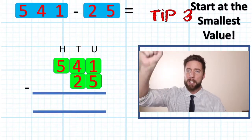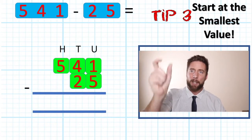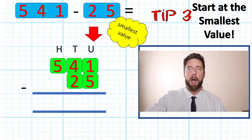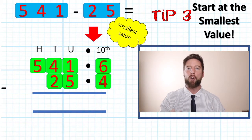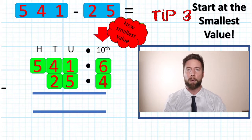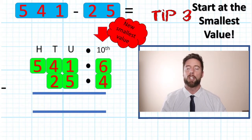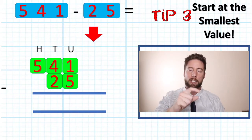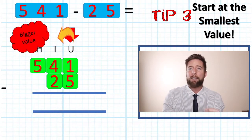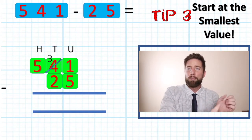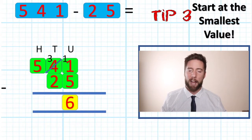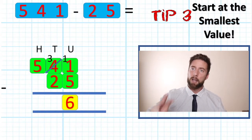Tip number three: start at our smallest value. It might be units, it might be decimals, but we always know the further to the right on our place value, the smaller the value. We always start at our smallest value so that if we've got something to borrow, we have got something bigger next door to borrow from. Start at our smallest value is tip number three.